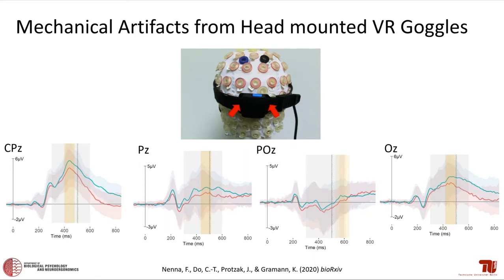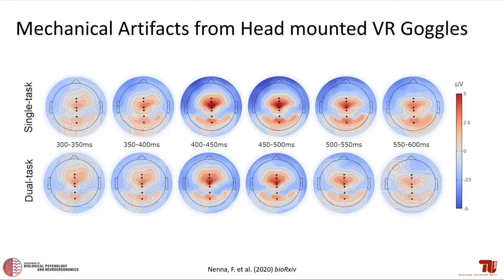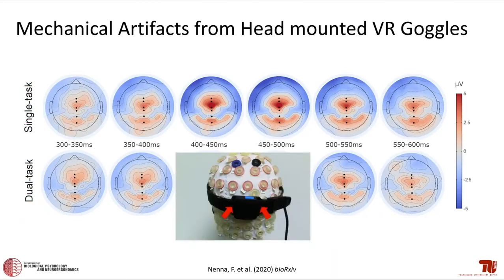Depending on the strapping system of different HMDs, this can be a problem for a larger number of electrodes. Signal-to-noise ratio, computed as the mean P3 amplitude divided by the standard deviation of the pre-stimulus baseline, was significantly reduced at the affected electrode compared to occipital and central parietal leads. The strapping system also impacts temporal region electrodes as it moves around the head and puts pressure on multiple sensors.